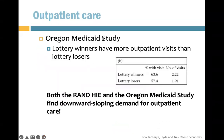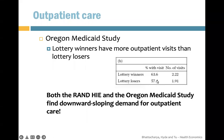In the Oregon study, there are similar results for outpatient care. 63.6% of lottery winners visited the hospital within that year, but only 57.4% of non-winners visited, and their number of visits was also lower. Both the RAND study and Oregon study find downward-sloping demand for outpatient care.